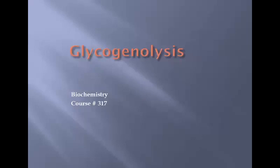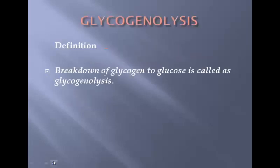Today we have our topic glycogenolysis. As the name indicates, glycogenolysis is the lysis — meaning breakdown — of glycogen. As I told you in the lecture of glycolysis, glycolysis is the breakdown of glucose, whereas in the case of glycogenolysis it is the breakdown of glycogen to its monomer, that is glucose. So the definition: the breakdown of glycogen to glucose is called glycogenolysis.